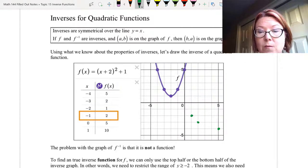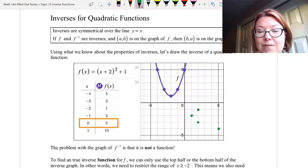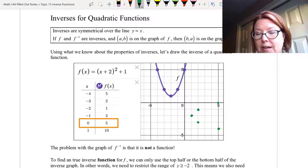The next point of f is (-1, 2), so I'm going to graph (2, -1). The next point on f is (0, 5), so I'm going to graph something at (5, 0). (1, 10) doesn't fit on my graph very well, so I'm going to leave that one out.